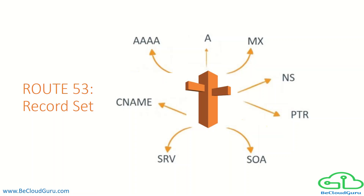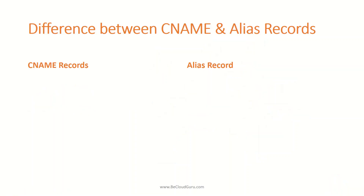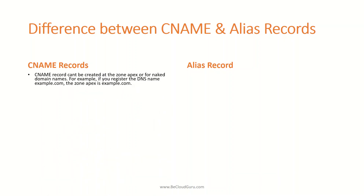Route 53 supports two types of alias records: CNAME records and Alias records. It's important to know the differences between them, because although the functionality looks similar, there are certain key differences. A CNAME record cannot be created at the zone apex, also known as a naked domain. For example, you cannot create a CNAME for example.com itself — which is the zone apex — but you can create a CNAME for www.example.com. However, an Alias record can be created at the zone apex.